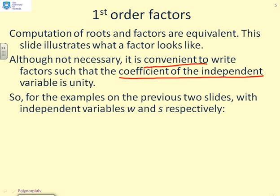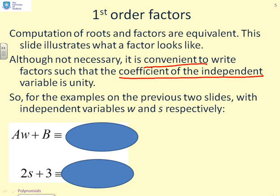So I'll emphasize this again. It's not necessary, but it's convenient. So we'll look at the examples on the previous two slides with independent variables w and s, and we will ask ourselves, what will the factors be like for these two polynomials? So here we go. We've got Aw plus B. That was our polynomial.